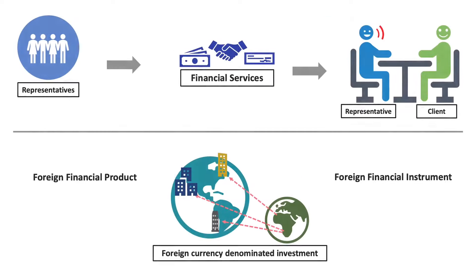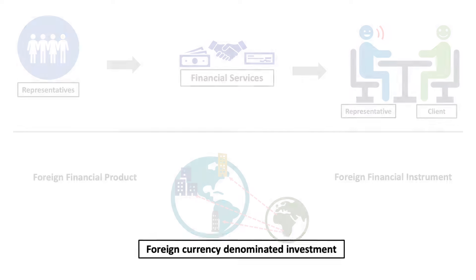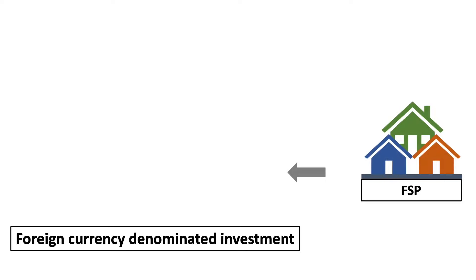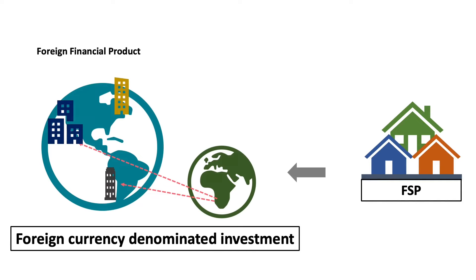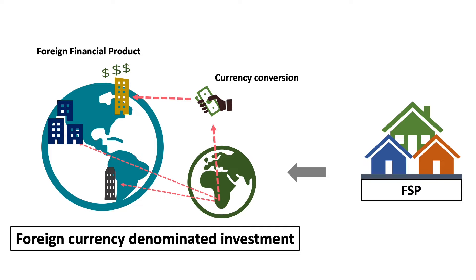Next, we have a financial product called foreign currency denominated investment, also known as a foreign financial product or foreign financial instrument. A good example is when an FSP makes an arrangement on behalf of a client to buy a product or investment available outside of the Republic of South Africa. In this case, South African currency must be converted into the currency of the country where the investment is — like the British pound or US dollar. Another example is where a client buys shares of a foreign company using foreign currency.